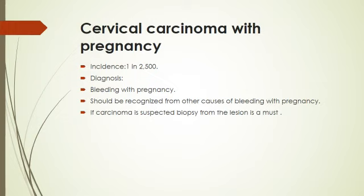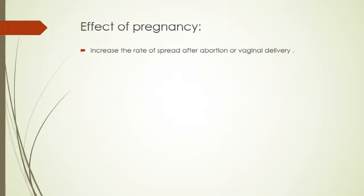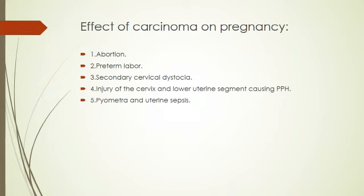Cervical carcinoma in pregnancy: incidence is 1 in 2,500 pregnant patients. Diagnosis: bleeding during pregnancy should be differentiated from other causes. If carcinoma is suspected, biopsy from the lesion is essential. The effect of pregnancy on cervical carcinoma is to increase the rate of spread after abortion or vaginal delivery. The effect of carcinoma on pregnancy includes abortion, preterm labor, secondary cervical dystocia, injury of the lower uterine segment causing postpartum hemorrhage, pyometra, and uterine sepsis. Management depends on the degree or stage of carcinoma and the trimester of pregnancy, and is fully discussed in the gynecology lecture on carcinoma of the cervix.